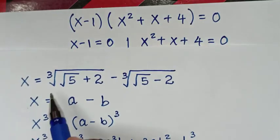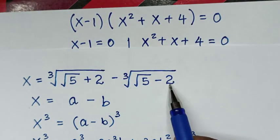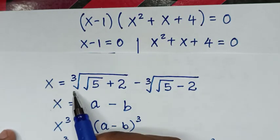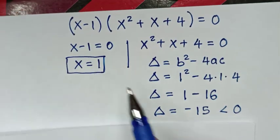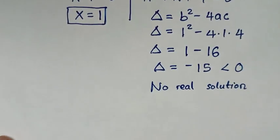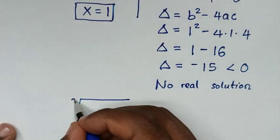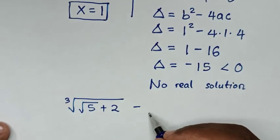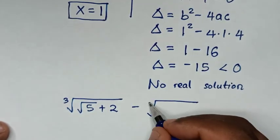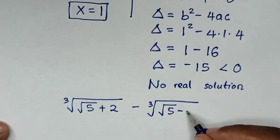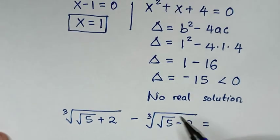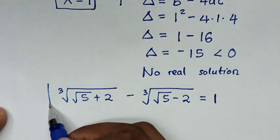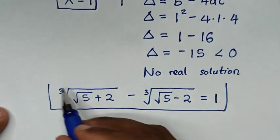Recalling that we let the original expression equal x, we conclude that the cube root of (square root of 5 plus 2) minus the cube root of (square root of 5 minus 2) equals 1. This is the final answer.